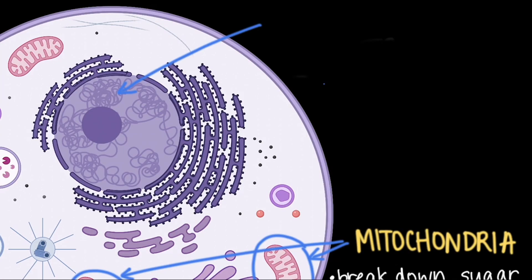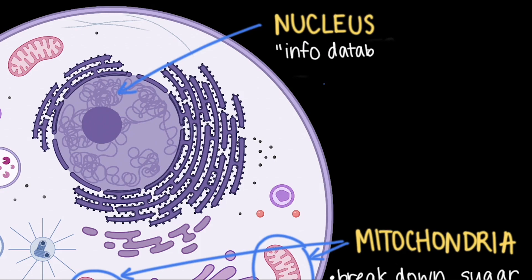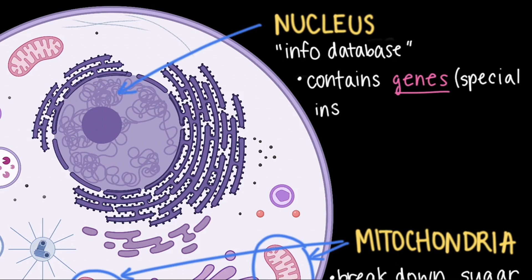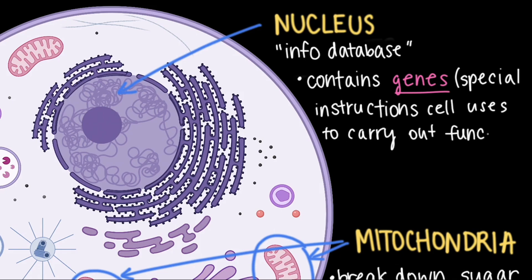Another really amazing organelle is the nucleus. You can think of the nucleus as the information database of the cell. It contains DNA, which includes the cell's genes — special instructions that the cell uses to carry out its functions.